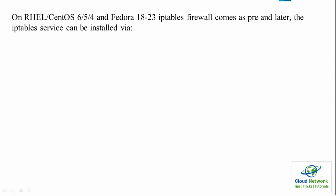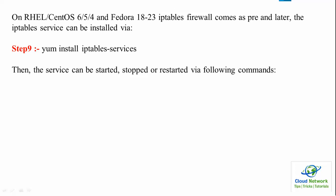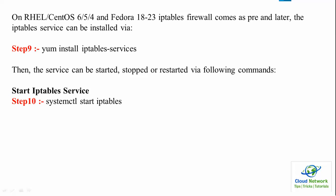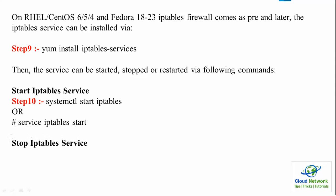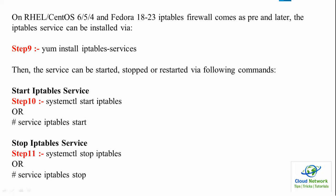Now we move on to start and stop the IP tables service. Step 9 is to install the IP tables service by default. To start the service use systemctl start iptables, or alternatively use service iptables start. To stop IP tables use systemctl stop iptables, or service iptables stop.